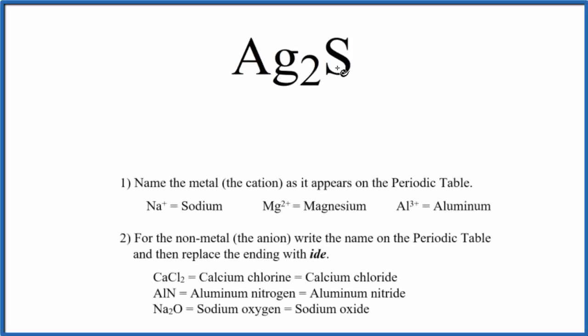To write the name for Ag2S, we first have to think about what type of compound we have. Since we have a metal and a nonmetal, we're going to treat this as an ionic compound. So because of that, we'll use these rules here.